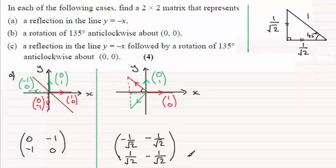So there's our matrix then that represents a rotation of 135 degrees anticlockwise about the origin.